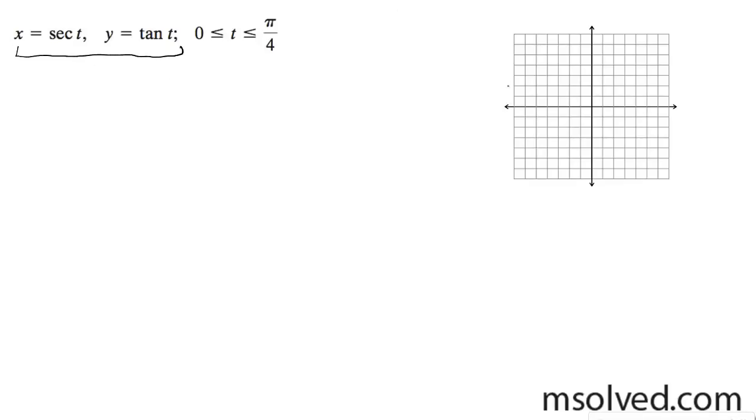So starting off at 0, the secant of 0, that's 1 over the cosine, so that'd be 1 over 1, that starts here, and then the tangent of 0 is 0.